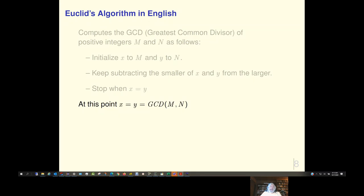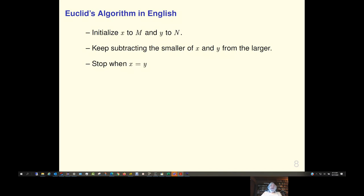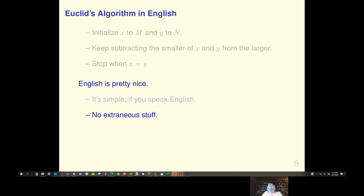But I'm not going to say much about the algorithm, but about how we describe it. So, here's Euclid's algorithm in English. Well, actually, these other parts are the properties of the algorithm. What it does and what's true of it when it stops. But they're not part of the algorithm. So, we can ignore those for now. Now, English is pretty nice. It's simple if you speak English. There's no extraneous stuff in this description. But English has problems.